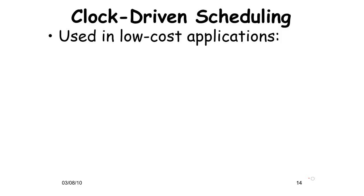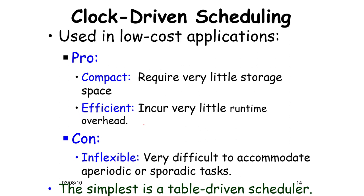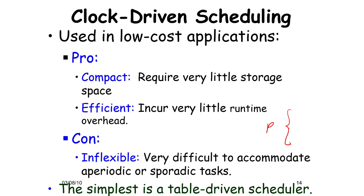Clock-driven scheduling is used in low-cost applications. Pros: it requires very little storage, is space-efficient, and incurs little runtime overhead. The only problem is that if periodic or sporadic tasks keep arriving mid-schedule, it is inflexible and cannot accommodate them. For that we need a slightly more sophisticated schedule, but the table-driven scheduler — where capital P equals the LCM of all task periods — is the simplest option.